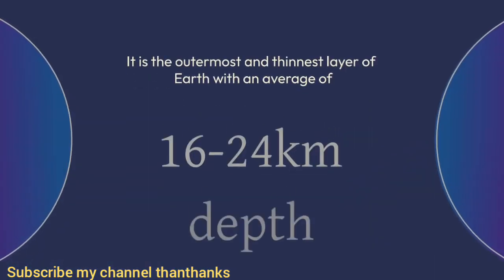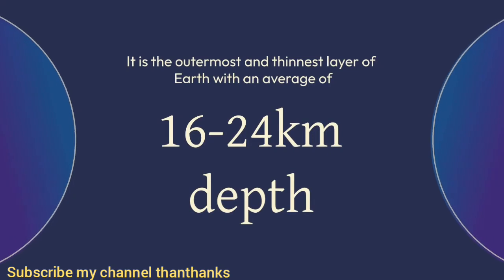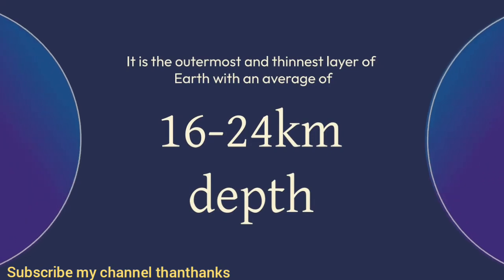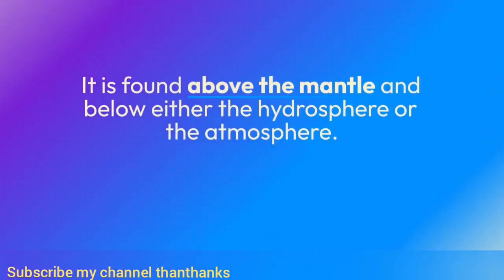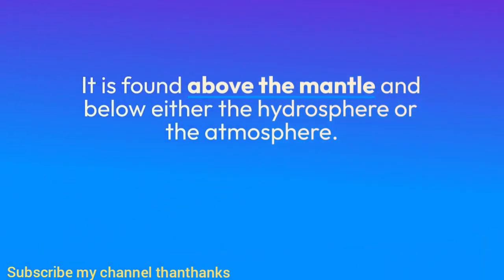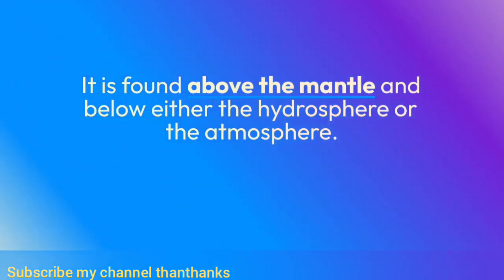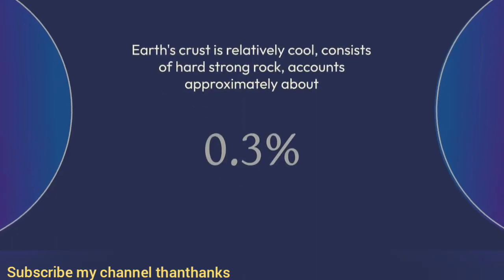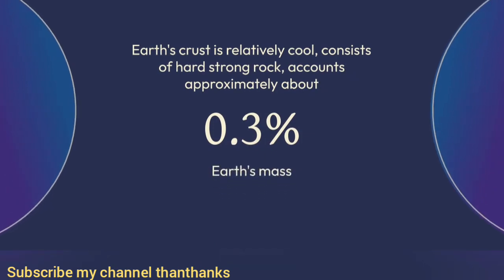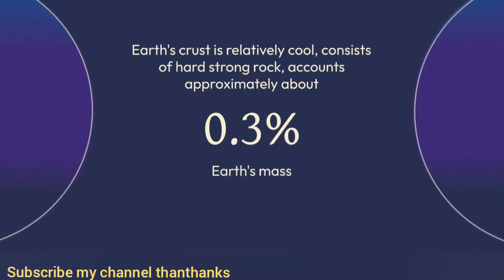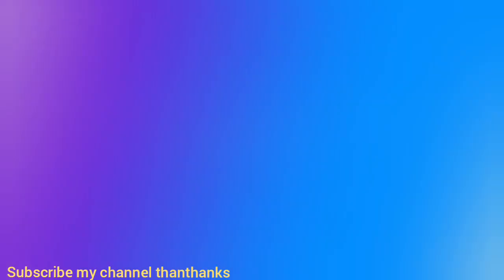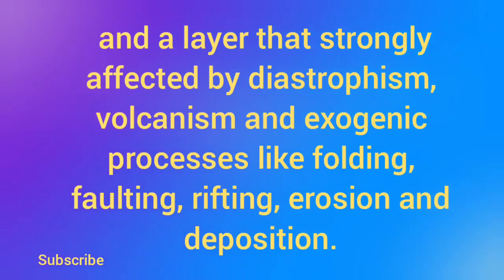1. Crust. The crust is the outermost and thinnest layer of Earth, with an average depth of 16 to 24 kilometers. It is found above the mantle and below either the hydrosphere or the atmosphere. Earth's crust is relatively cool and consists of hard, strong rock, accounting for approximately 0.3% of Earth's mass.